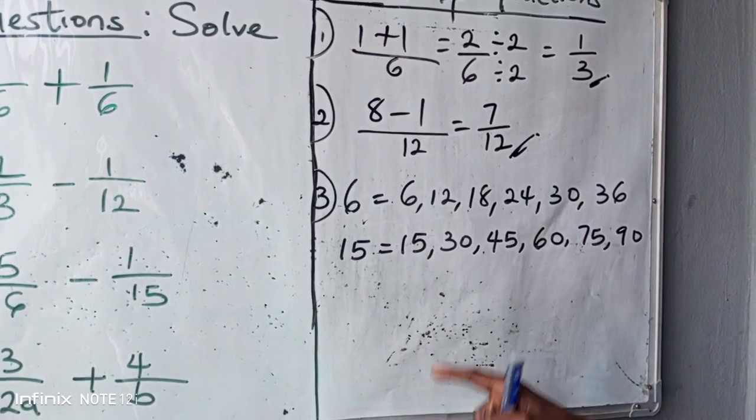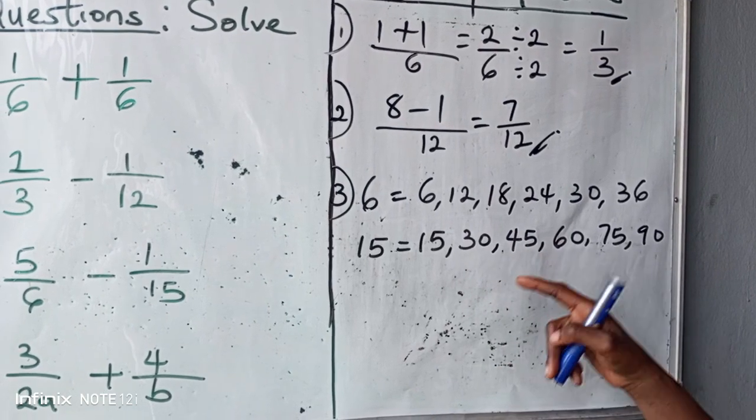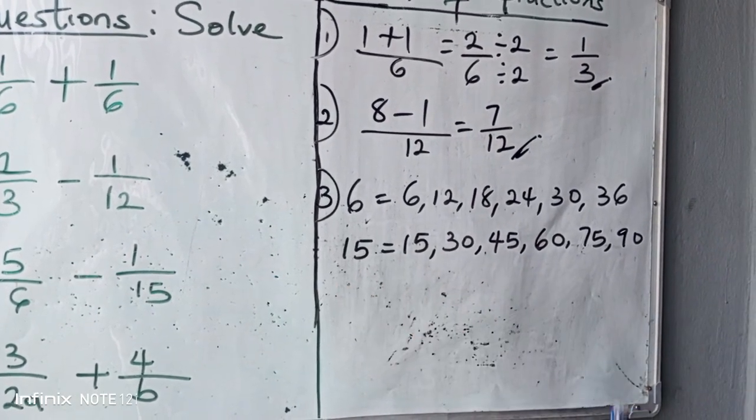Now fifteen. Fifteen times one, fifteen. Fifteen times two, thirty. Fifteen times three, forty-five. And that's how you get your multiple of fifteen.